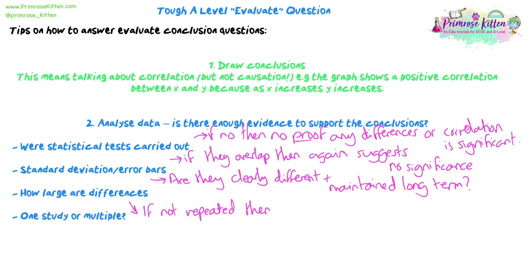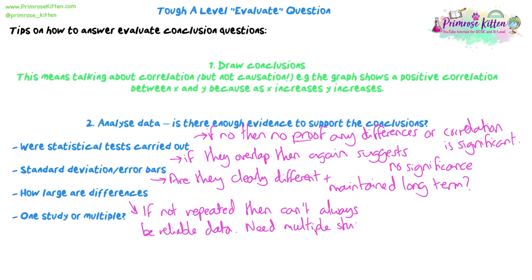Is it one study, or have they done it multiple times? If it's not repeated, you can say the data may not be reliable because it was only done once — unless the study was incredibly large with lots of people in it. Realistically, no drugs or clinical trials go forward unless there are quite a few studies coming together to show the effect is consistent and happens across all different types of the population.